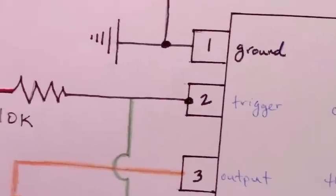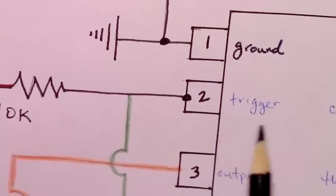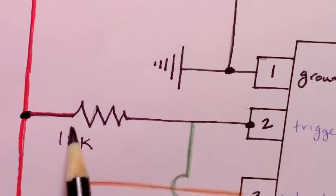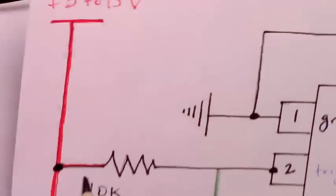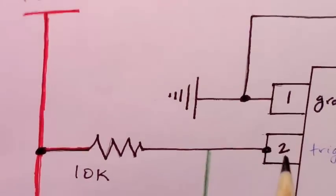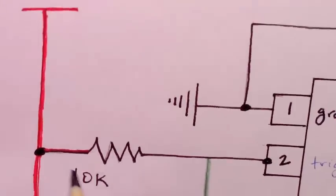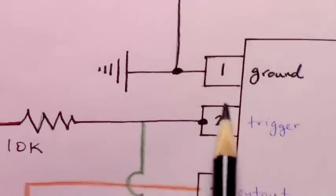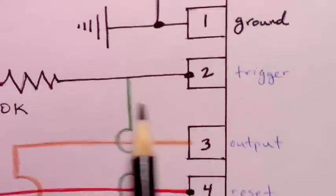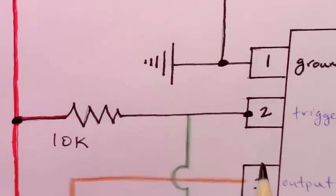We can move down to the trigger pin or pin 2 and add in a 10K pull-up resistor. It's a pull-up resistor because it's connecting pin 2 to VCC through that resistor. So, it will keep the state of pin 2 high until we trigger our momentary button.